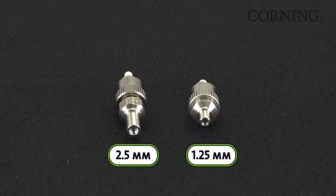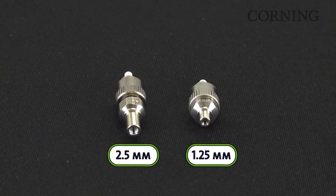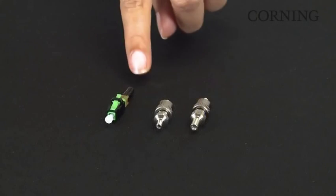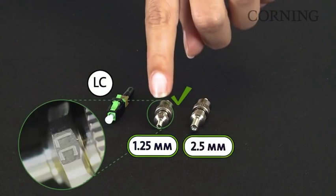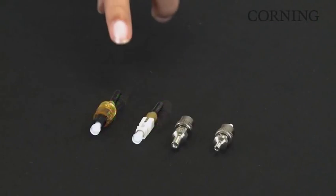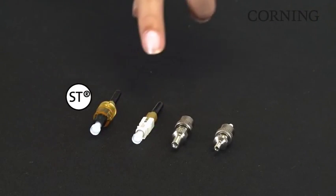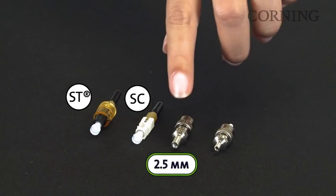The tool kit comes with two ferrule adapters: 2.5 millimeters and 1.25 millimeters. The 1.25 millimeter ferrule adapter is appropriate for use with the LC connector. The 2.5 millimeter ferrule adapter is appropriate for use with SC and ST compatible connector designs.